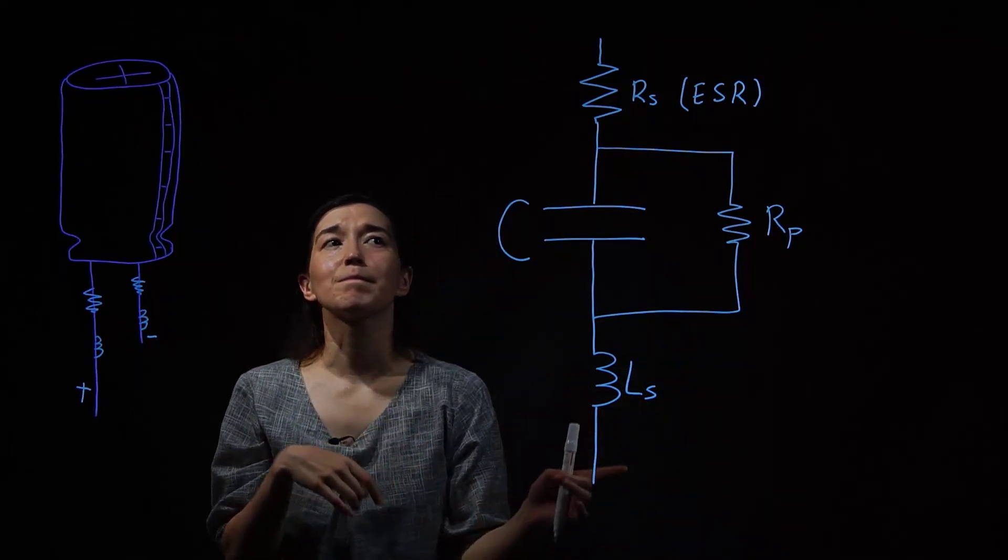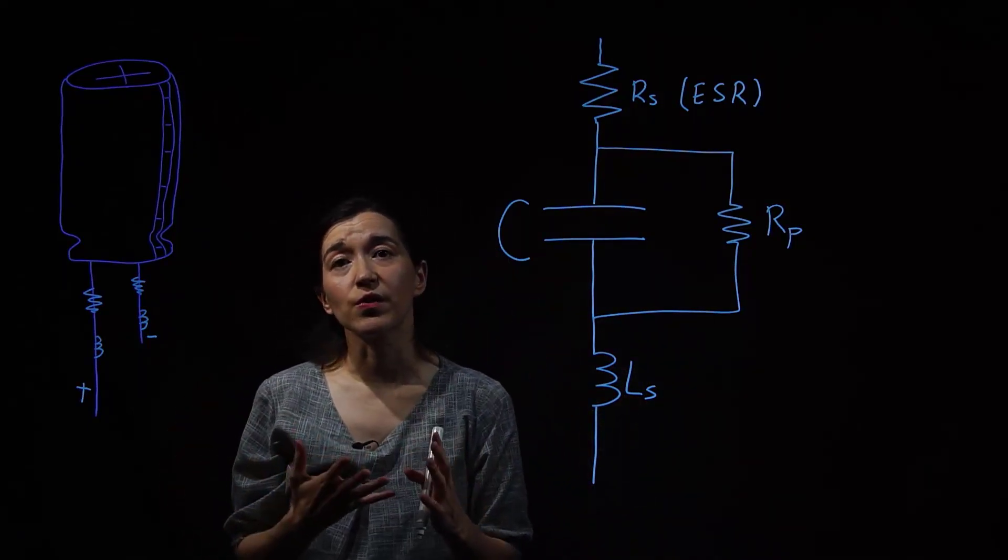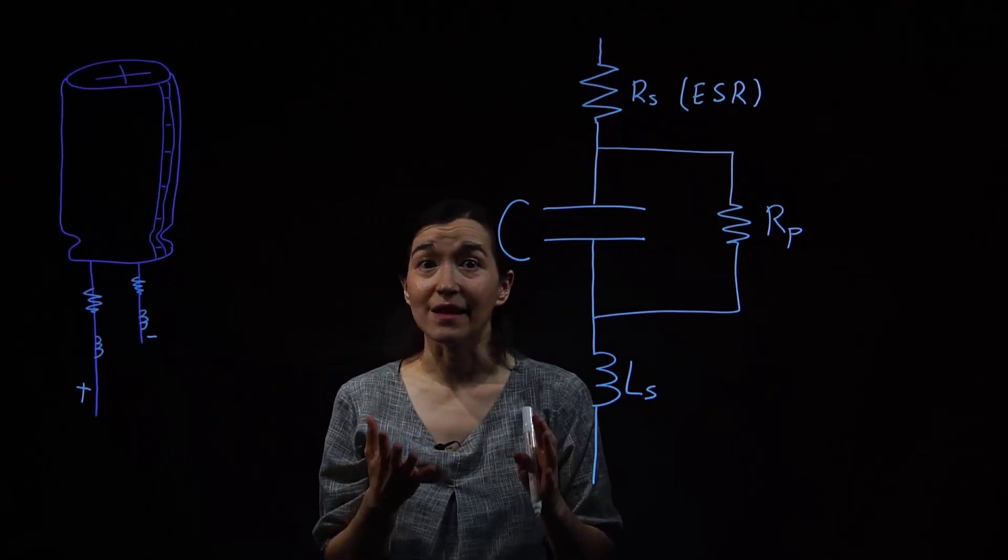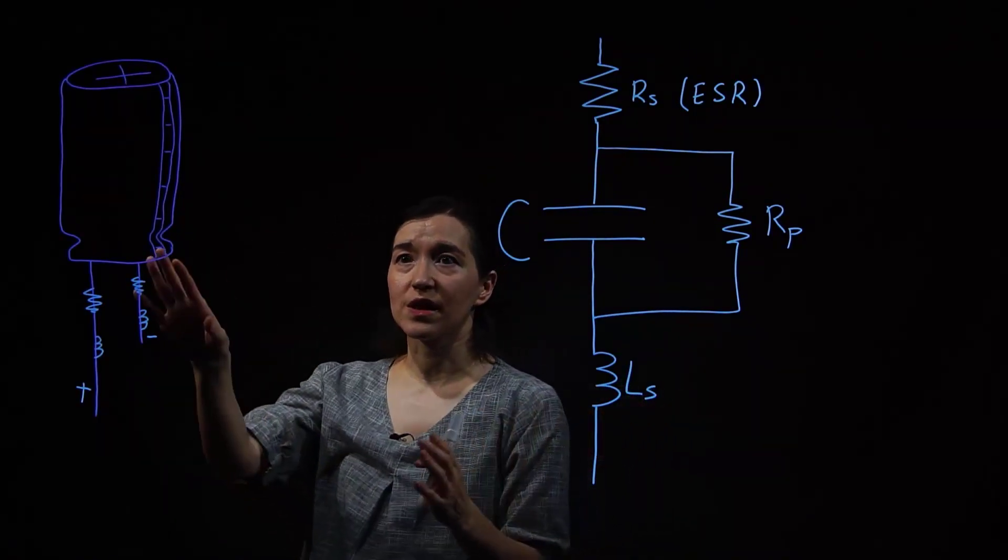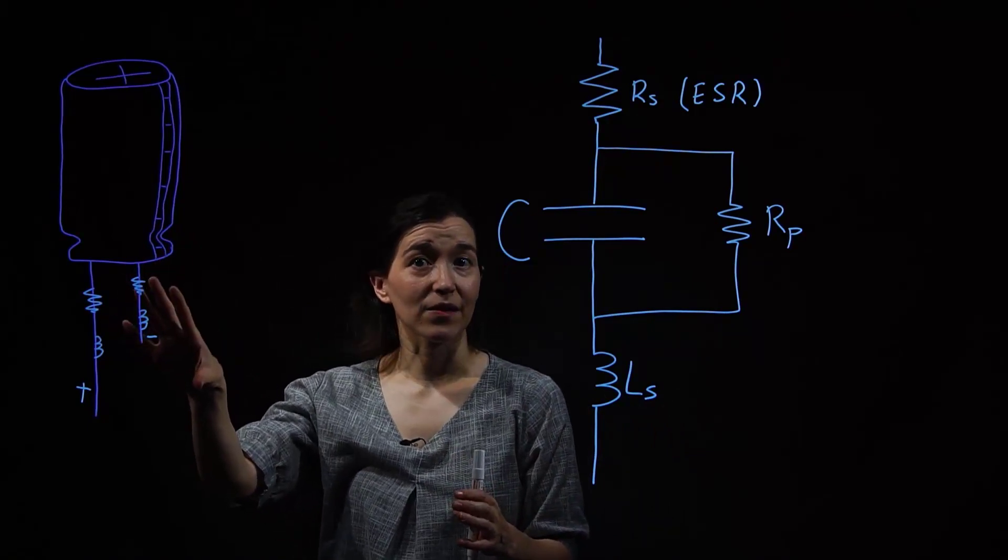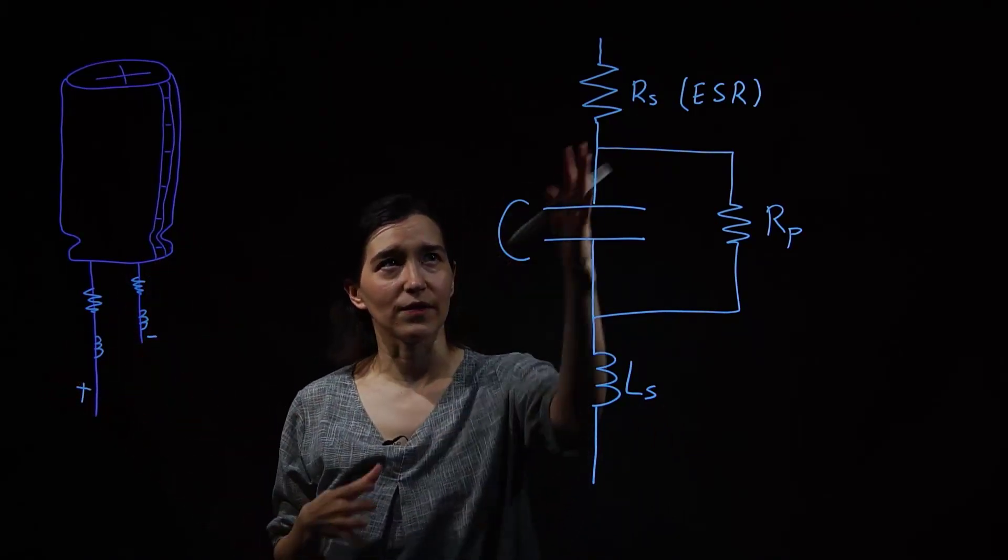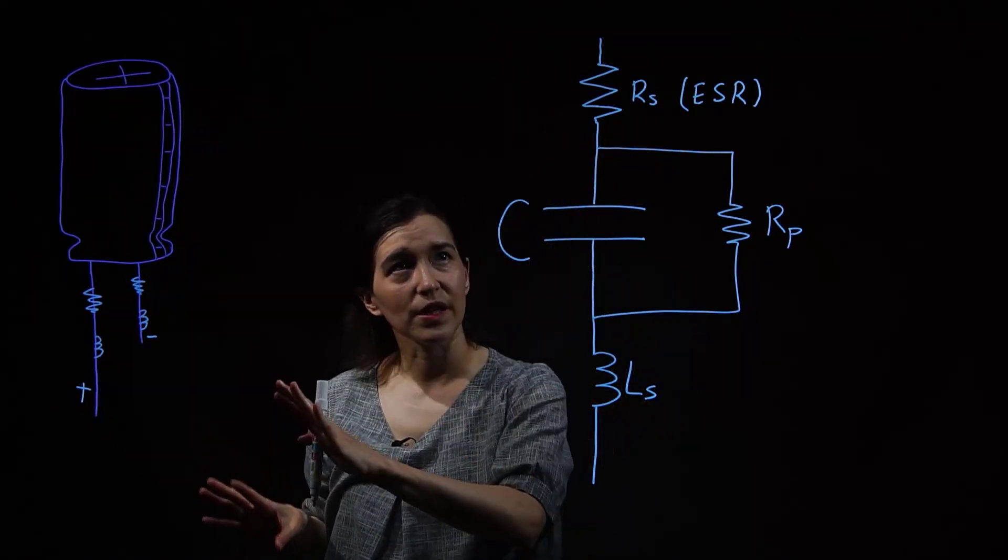However, we often simplify this model when we use it, for example, in looking at DC-DC converters. And usually the most prominent one, especially when we're looking at electrolytic capacitors, the different types of capacitors will have different values. But in electrolytic capacitors, this ESR, the equivalent series resistance, tends to be a little larger.